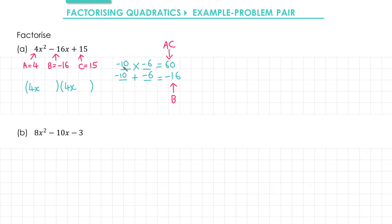The next step is to simply take these two values we've found and put them into the brackets, so negative 10 and negative 6. It doesn't actually matter which way round you put them.